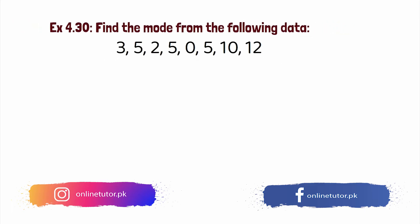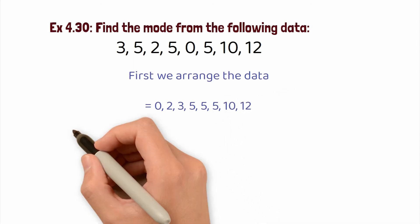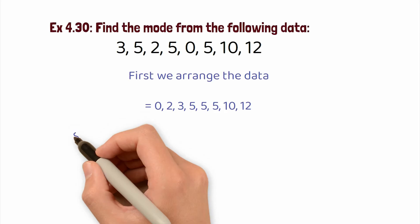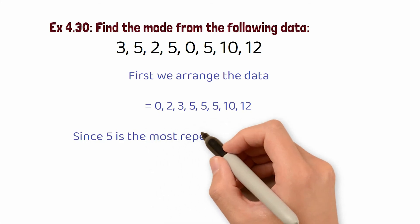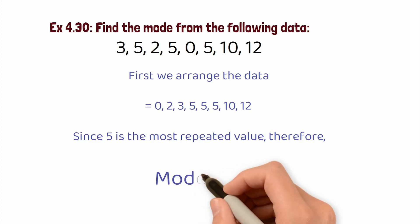First, we arrange the data in ascending order. The smallest number is 0, then 2, then 3, then 5, then 5, then 10, then 12. Now we look at the repeated values: 0, 2, and 3 each appear 1 time. The value 5 appears 3 times. Then 10 and 12 appear 1 time each. Since 5 is the most repeated value, therefore mode equals 5.